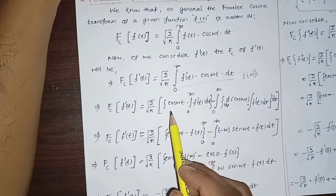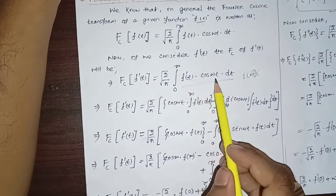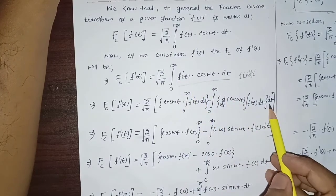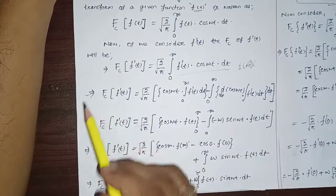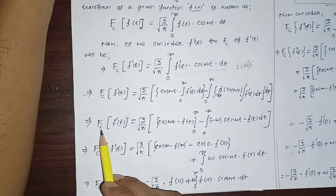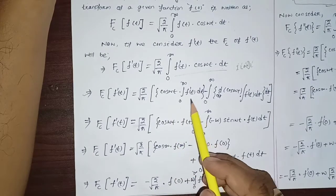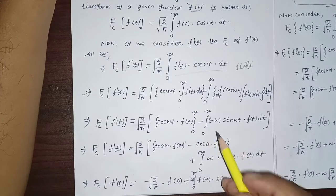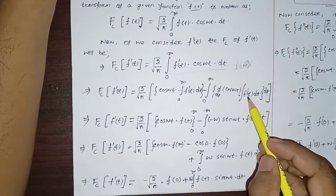Applying integration by parts: cos(ωt) · [∫₀^∞ f'(t) dt] minus ∫₀^∞ [d/dt(cos(ωt)) · ∫f'(t) dt] dt. This simplifies so that the integration of f'(t) gives f(t), removing the derivative. We write: FC{f'(t)} = √(2/π) · { [cos(ωt) · f(t)]₀^∞ minus ∫₀^∞ (−ω sin(ωt)) · f(t) dt }.